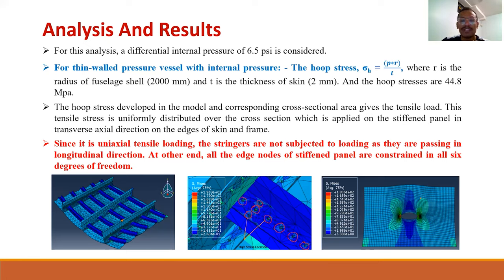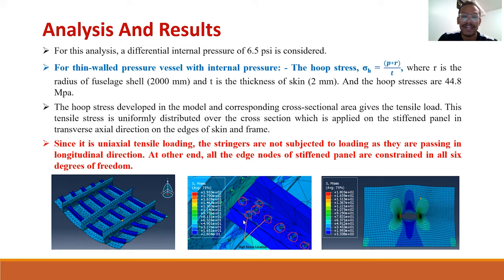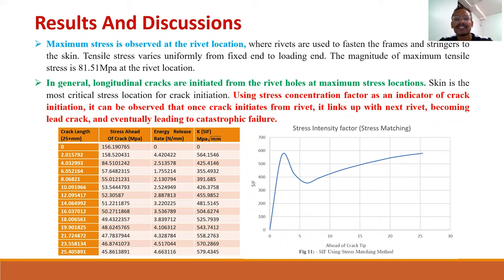Since it is the case of uniaxial loading, the stringers are not subjected to loading as they are oriented in the longitudinal direction. All the edge nodes of the stiffened panel are constrained in all 6 degrees of freedom. The model is meshed with shell elements; this is the rivet location and this is the crack opening. After the analysis, it can be found that the maximum stress is observed at the rivet location, where the rivets are used to fasten the frames and stringers to the skin, and the maximum tensile stress is found to be 81.51 MPa.